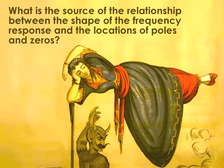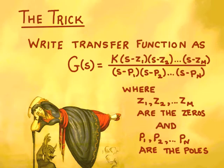To understand why these rules work, you have to see the following trick. We'll write the transfer function as g of s equals k times the product of (s minus z1)(s minus z2) through (s minus zm), where z1, z2, and zm are the zeros of the transfer function, divided by (s minus p1)(s minus p2) through (s minus pn), where p1, p2, through pn are the poles of the transfer function.